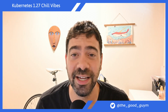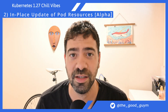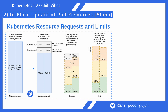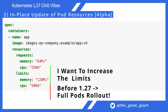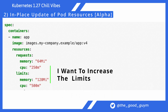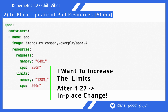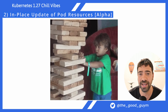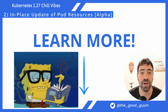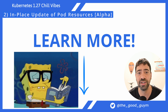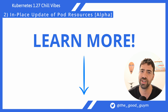Moving on to the second feature: in-place update of pod resources. We all know about pod resource requests and limits for CPU and memory. Before Kubernetes 1.27, changing one of these values would cause a full rollout for all pods in the deployment. From 1.27 onward, you can change the requests or limits and have the pods update in place without triggering a full rollout — as long as the application and infrastructure support it. Documentation and relevant links are in the description below.